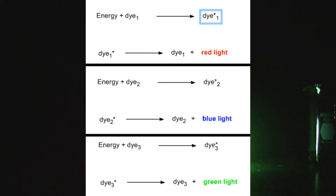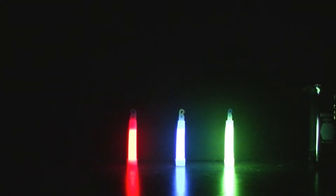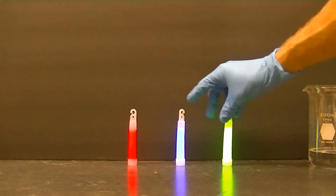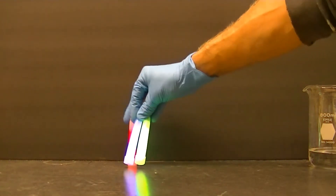Just like different marker colors come from different dyes, different glow stick colors come from different fluorescent dyes contained within the light stick. Now I'd like to show you how to make different colors of glow stick fluid using materials you can find at home.